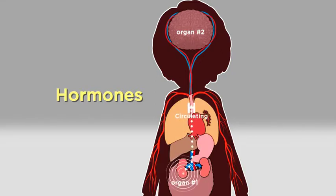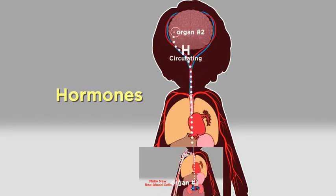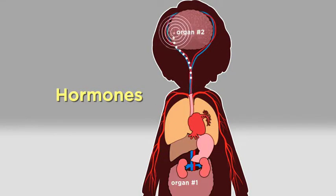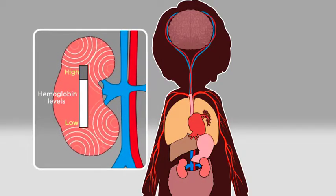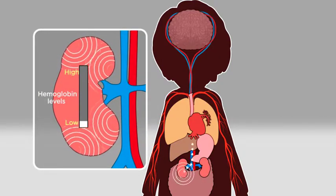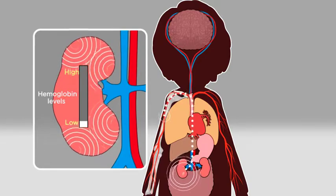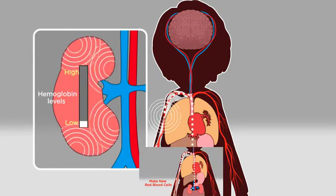You see, Maddie, hormones are chemicals made by one organ, which then travel to other organs in order to deliver their messages. Your kidneys have sensors that monitor your hemoglobin levels and figure out how much of the hormone EPO to release to keep those levels normal.